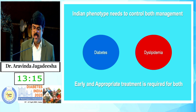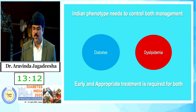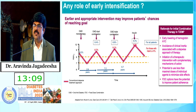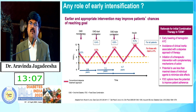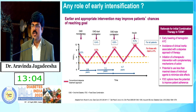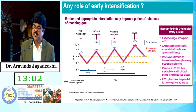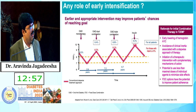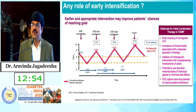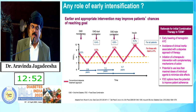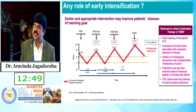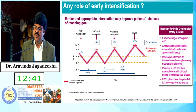The Indian phenotype needs to control both diabetes and dyslipidemia, and early and appropriate treatment is required for both. Instead of doing the conventional follow-up — one OAD, two OADs, three OADs — if you are aggressive from the beginning, you can avoid glycemic variability. That is the rationale for initial combination therapy in type 2 diabetes.